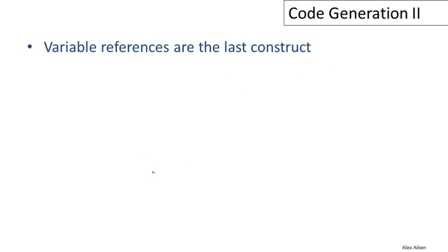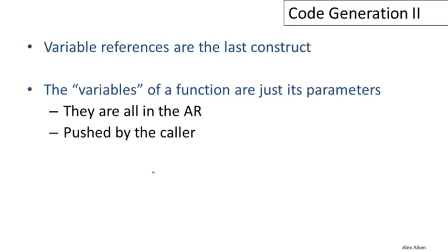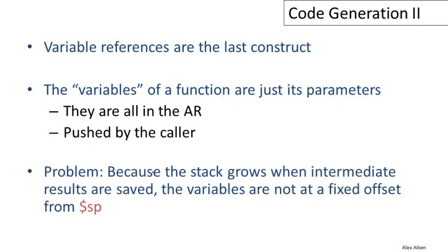The last construct is code generation for variable references. The variables of a function are just its arguments — there are no other kinds of variables in this simple language — and they are all in the activation record. The problem is that the stack grows and shrinks with intermediate values during execution of the function body. Values are pushed and popped for operations like plus, minus, and if-then-else, which means the variables in the activation record are not at a fixed offset from the stack pointer.